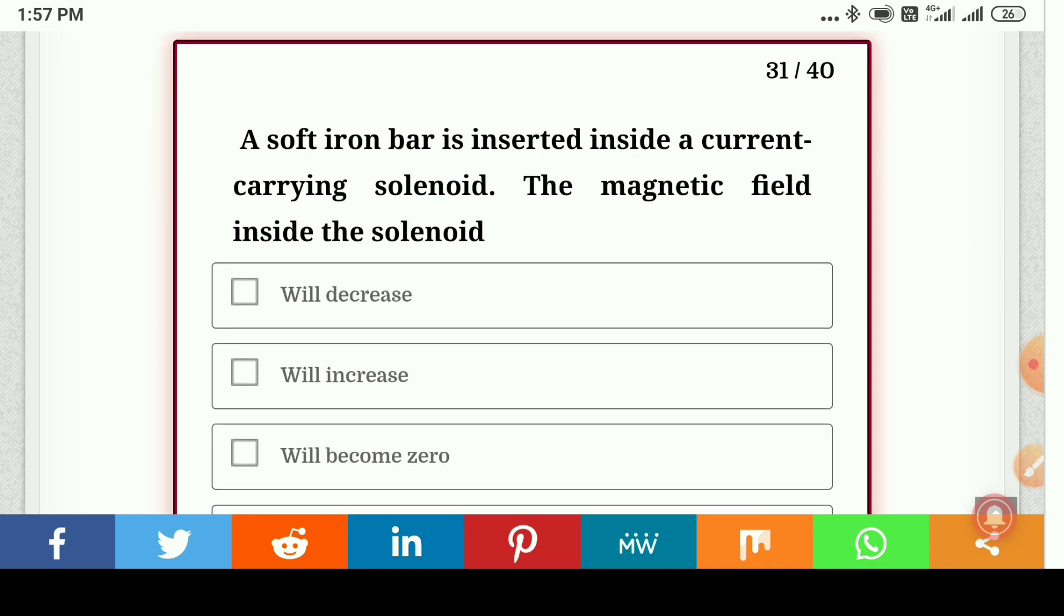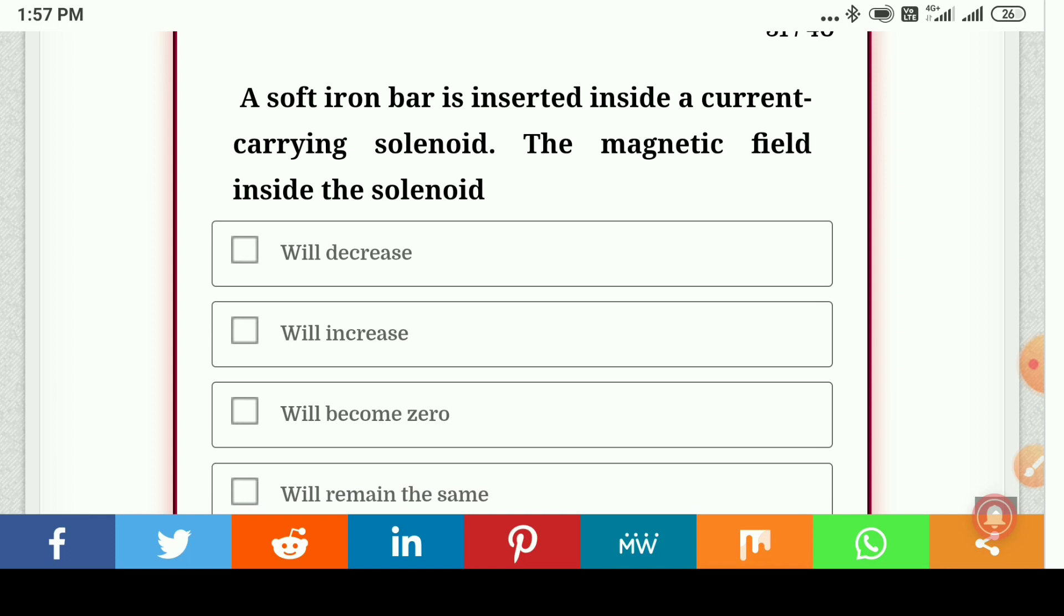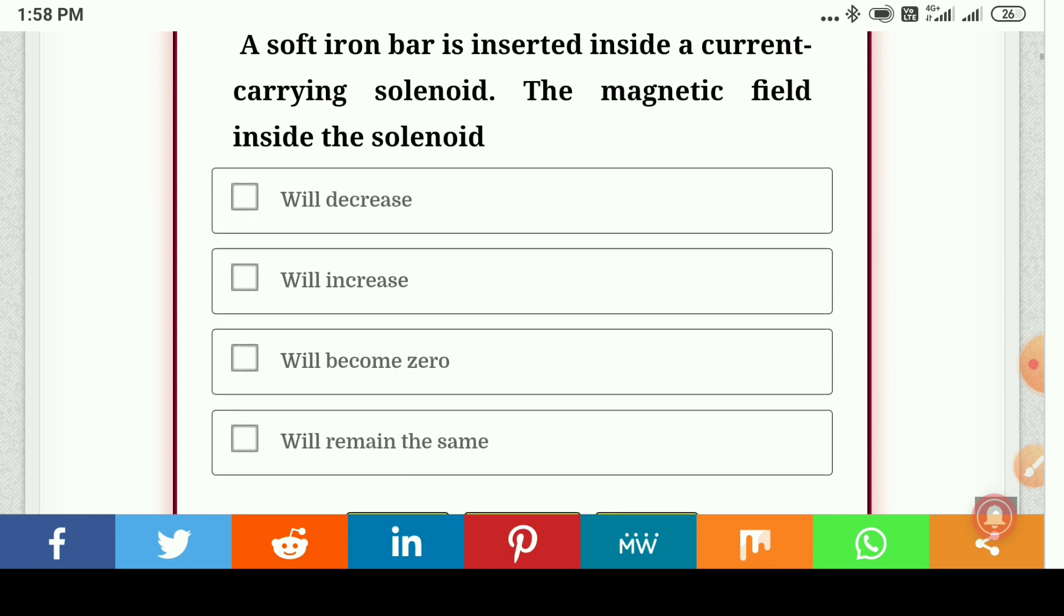A soft iron bar is inserted inside the current carrying solenoid. The magnetic field inside the solenoid will increase.